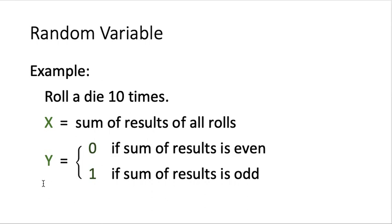We can also introduce a different function — let's call it Y. This Y has only two possible values that it can take on: either 0 or 1. When the sum of the results is even, then it is 0; otherwise it is equal to 1. So again, Y is a random variable, because for each outcome we can calculate the sum of the results, and depending on the results we either get a value of 0 or 1. So Y will map each outcome to a value of either 0 or 1, making Y not just a random variable but also a discrete random variable.